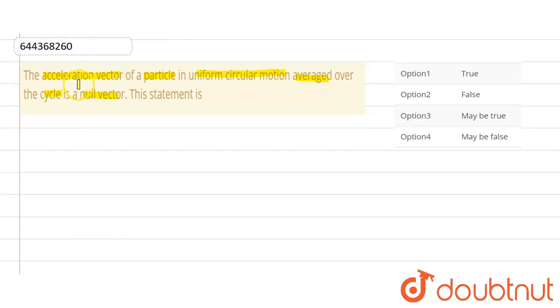The question is: acceleration vector of a particle which is performing uniform circular motion. So students, let us consider P is a particle, suppose this is a circular track, this is the radius, and let us suppose this particle P is performing the circular motion.